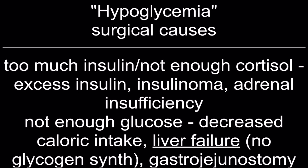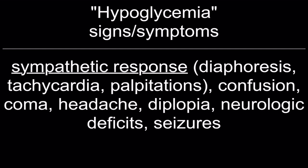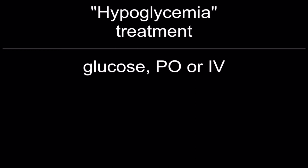Surgical causes of hypoglycemia: too much insulin, not enough cortisol, excess insulin, insulinoma, adrenal insufficiency, decreased caloric intake, liver failure due to lack of glycogen synthesis, and gastrojejunostomy. Signs and symptoms: sympathetic response — diaphoresis, tachycardia, palpitations — confusion, coma, headache, diplopia, neurological deficits, and seizures. Treatment: give glucose by mouth or IV.